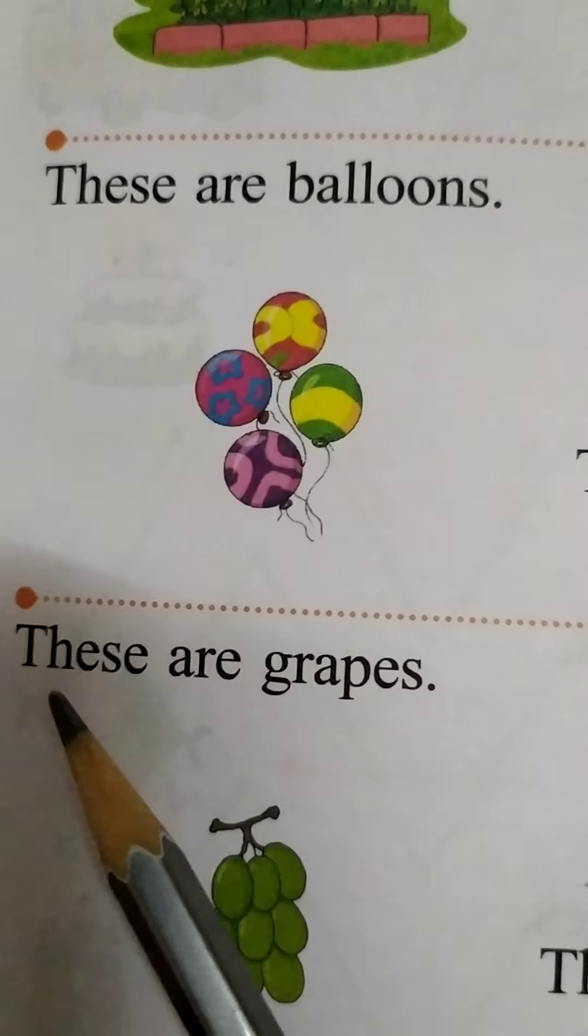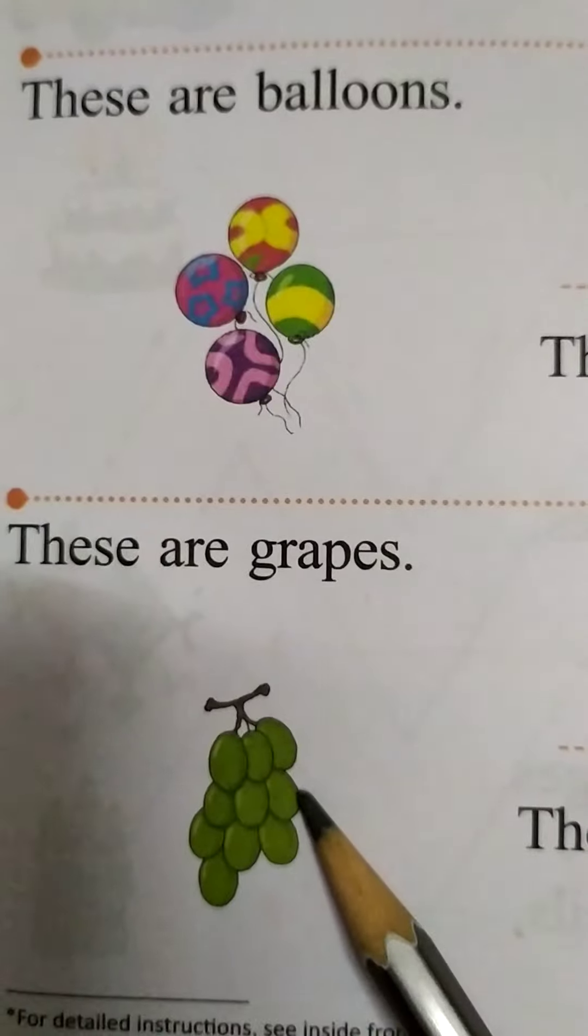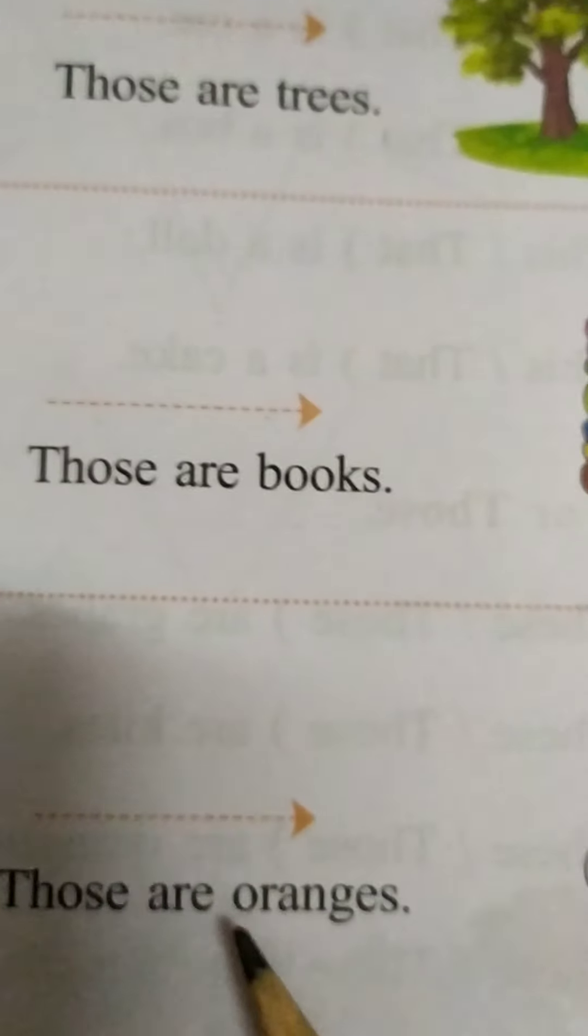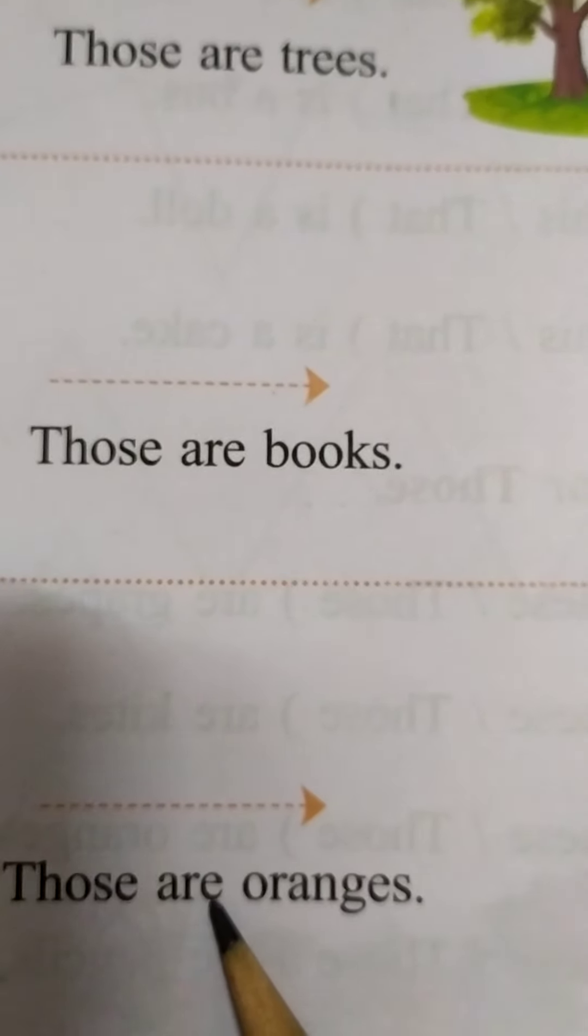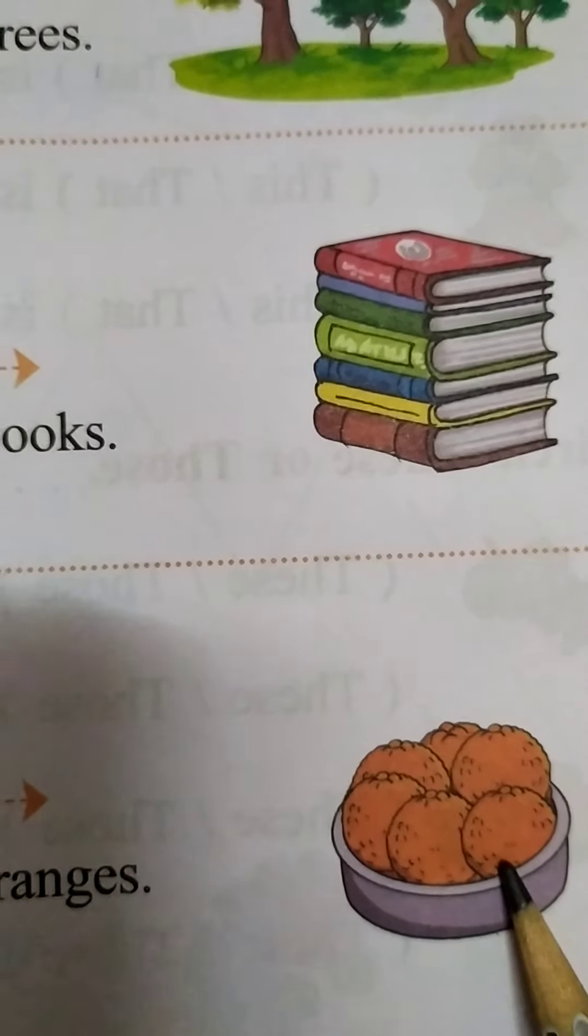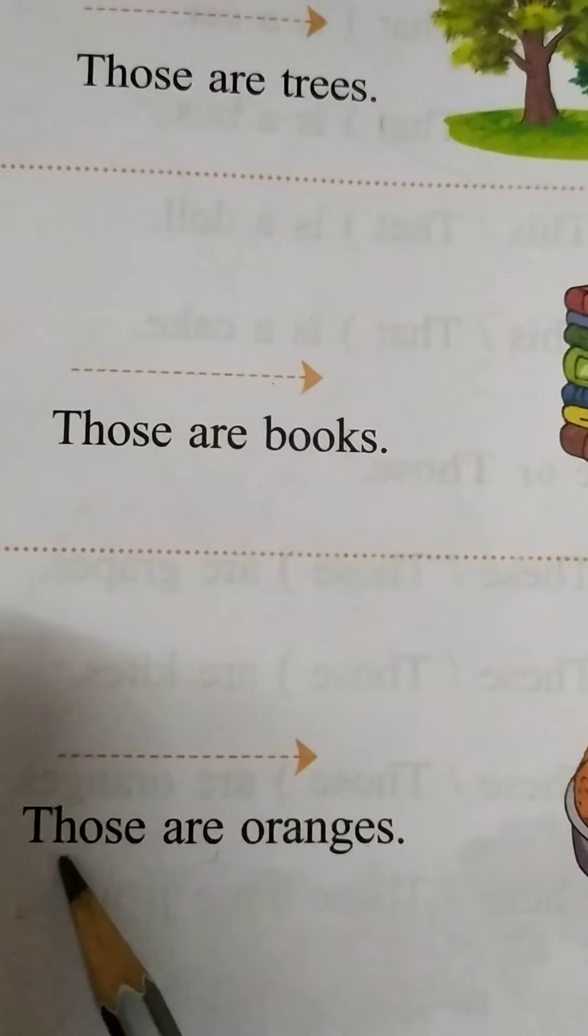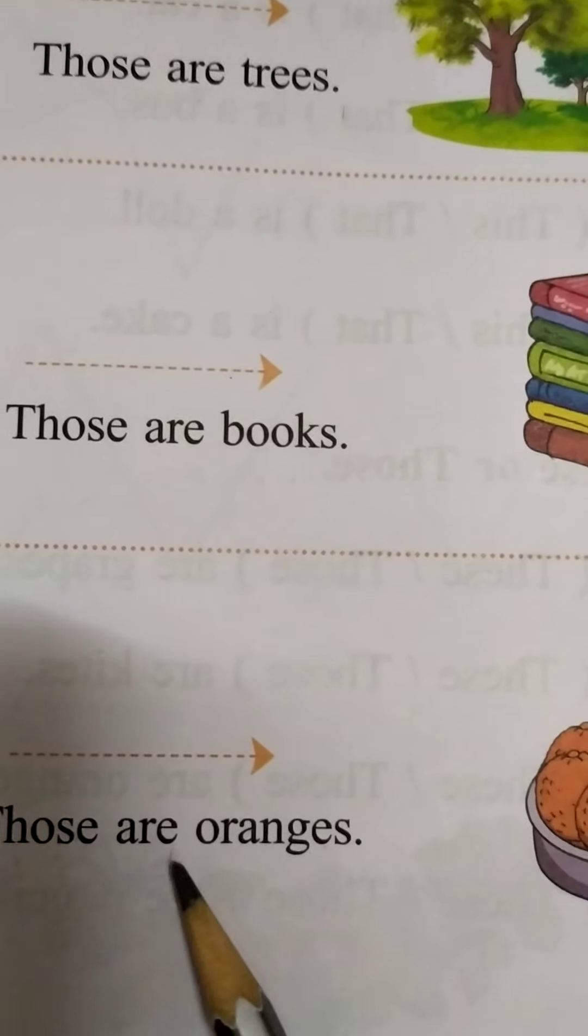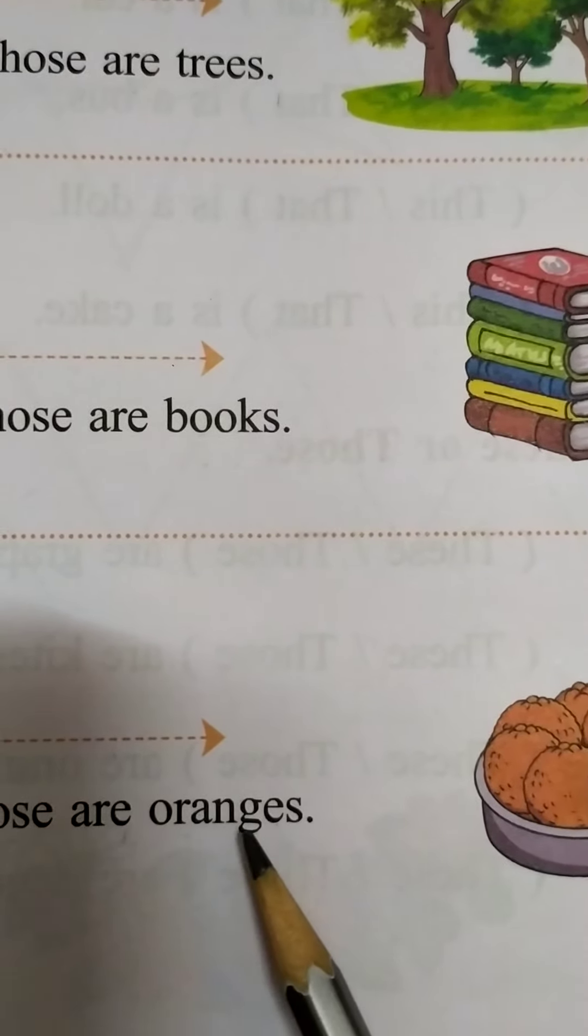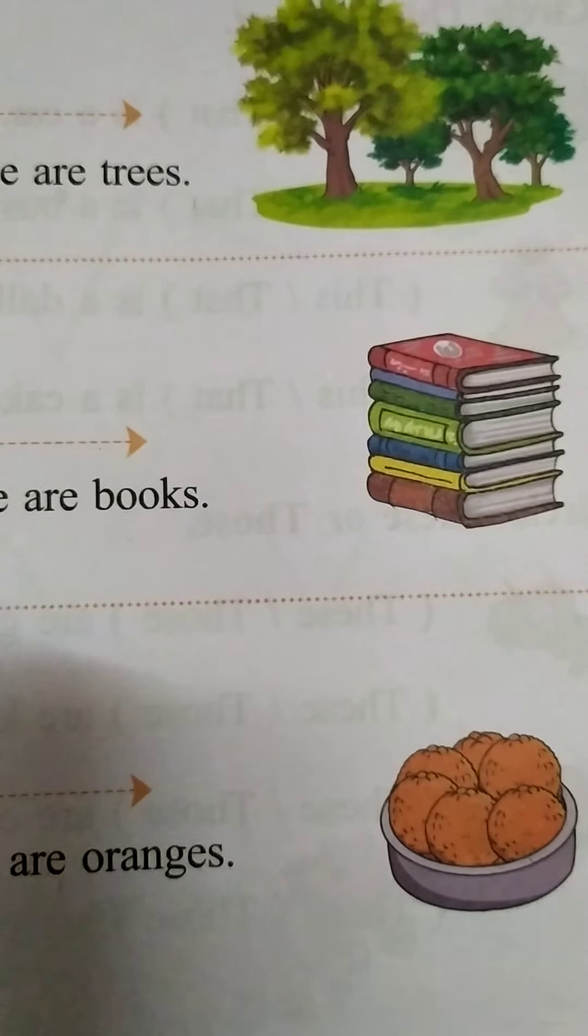These are grapes. More than one, near to us. These. Those are oranges. More than one, far to us. We use those. T-H-O-S-E. A-R-E. O-R-A-N-G-E-S. Oranges. Those are oranges.